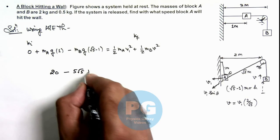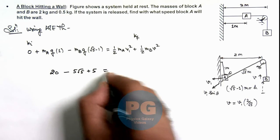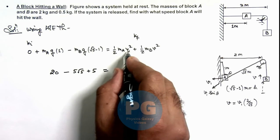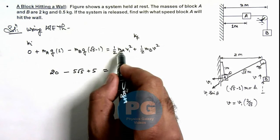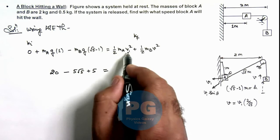Root 5 plus 5 is equal to: here, mass of block A is 2, so this 2 gets cancelled out, this will be v1 square.